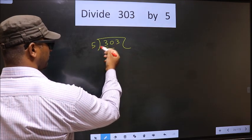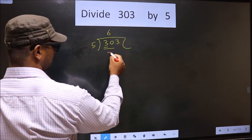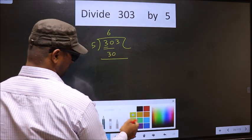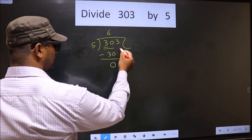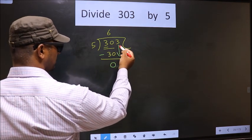When do we get 30 in 5 table? 5, 6, 30. Now you subtract. 30 minus 30 is 0. Now we bring down the beside number 3 down.